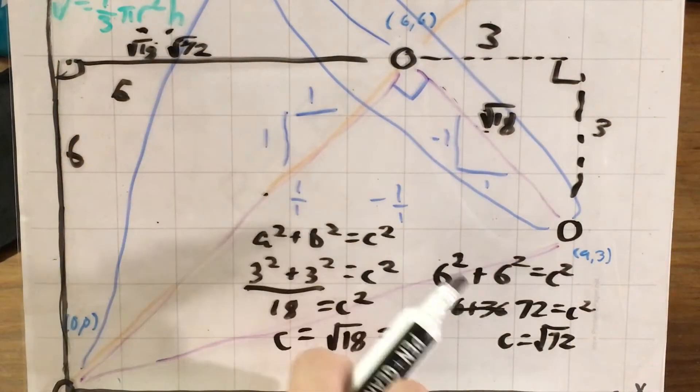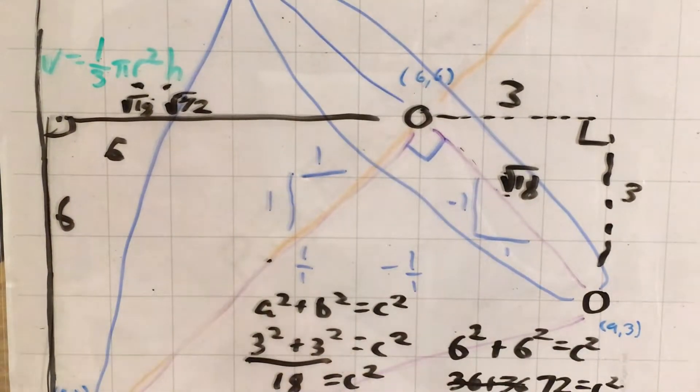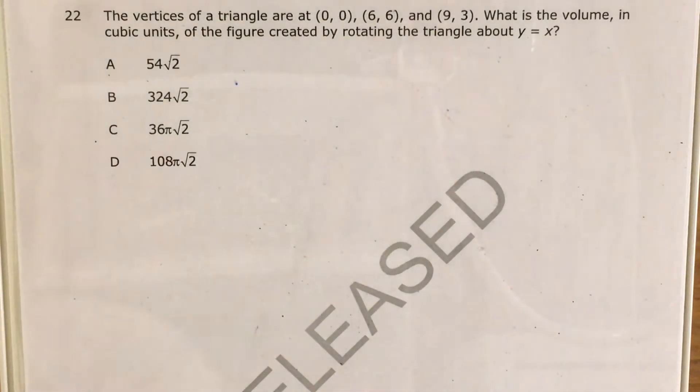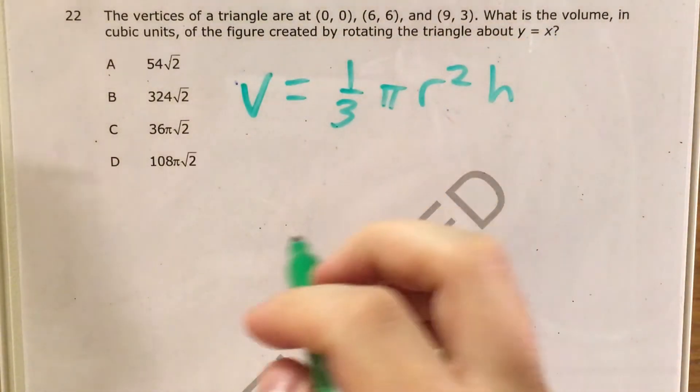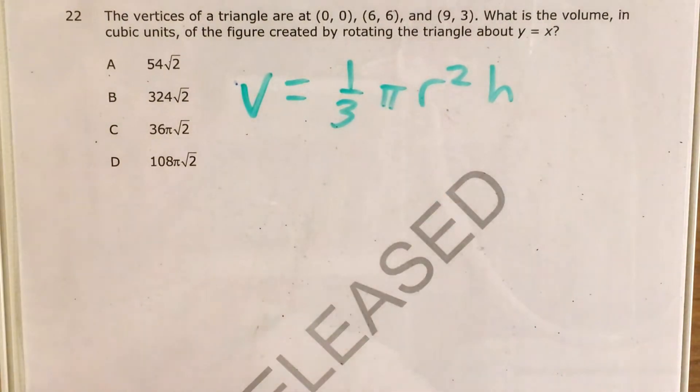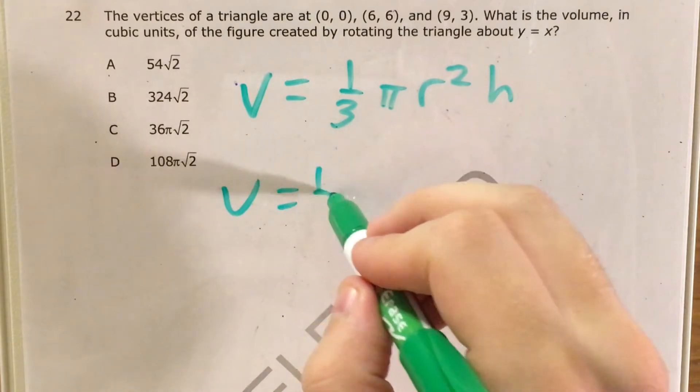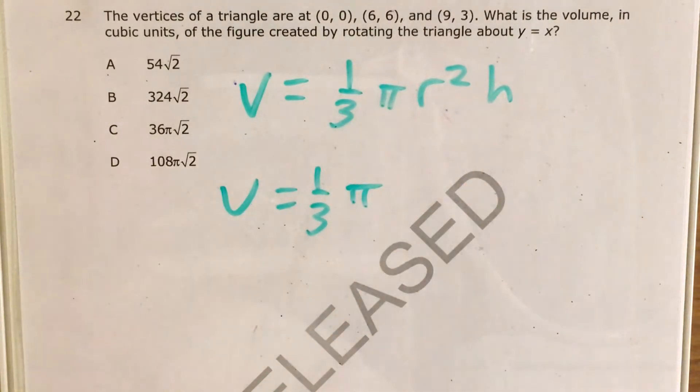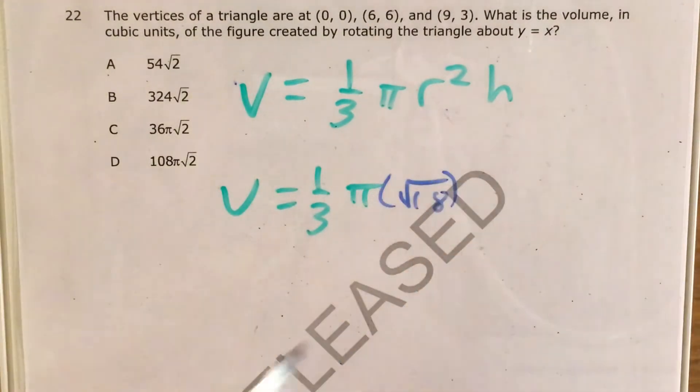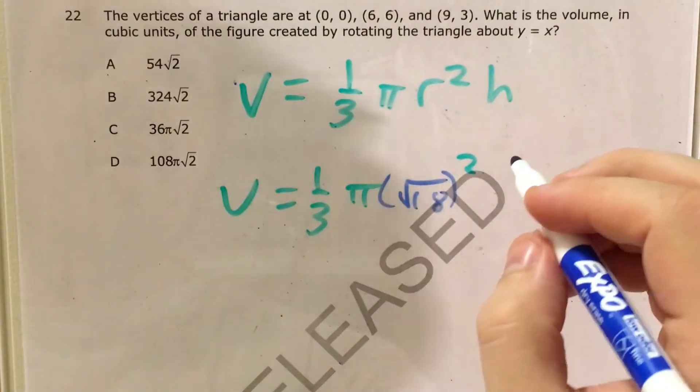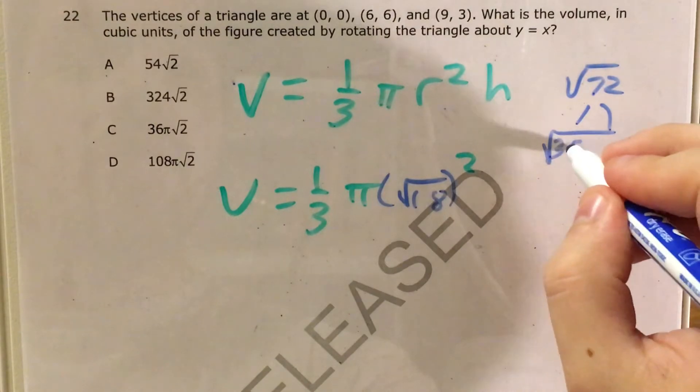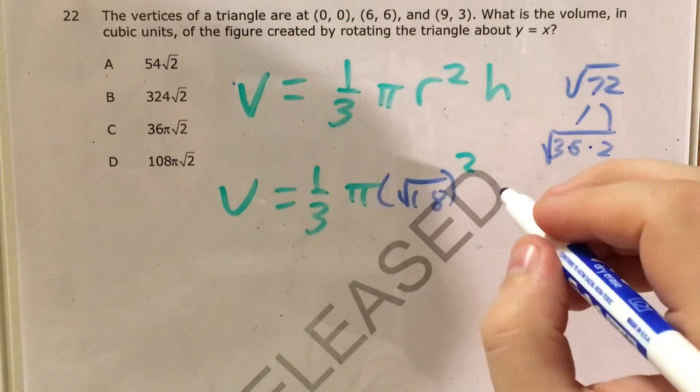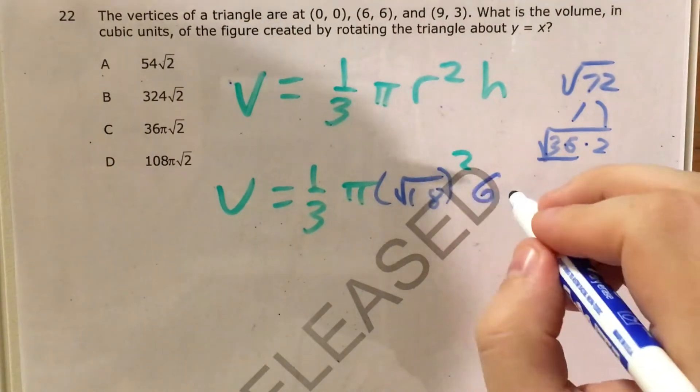Now that I have all the information I need to use my volume formula, my last step is to actually go ahead and use it. So let me take this off because it's getting very cluttered. Bring it back to this problem. My volume formula was 1/3 π r² h. And so I need to plug in the numbers that I know. That's 1/3 times π times the square root of 18 squared times and then the square root of 72. I'm going to break apart into the square root of 36 and the square root of 2.